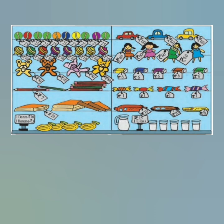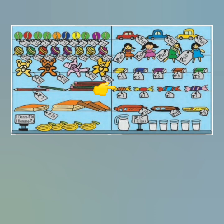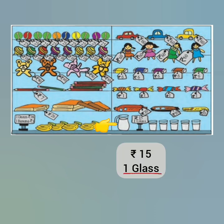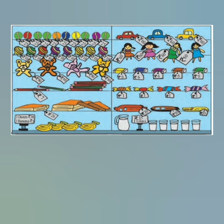On the right hand side, there are cars for 60 rupees each, dolls for 60 rupees each, erasers for 6 rupees each, chocolates for 1 rupee each, some packets for 10 rupees each, and milk for 15 rupees per glass. Let's see who will be the first customer to buy something from the shop.